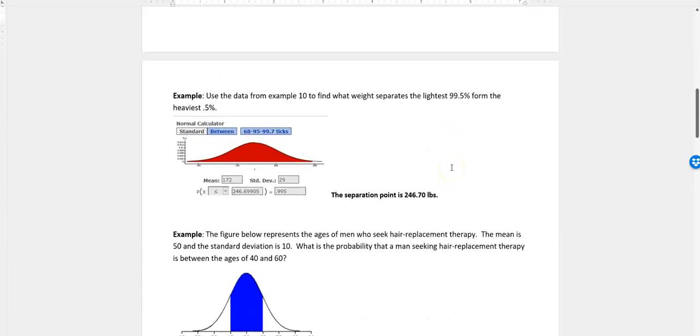Now we're looking at another example. Use the data from example 10 to find what weight separates the lightest 99.5% from the heaviest 0.5%. That's just the problem we were just doing. We still have 172 as a mean and 29 as standard deviation. We want to look at the lightest 99.5%, so put in 0.995. Always move your decimal point over two places. And then do less than, and that's going to give us the separation point, which is 246.70 pounds. That's the 99.5th percentile person at 247 pounds.